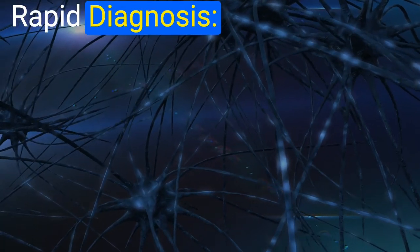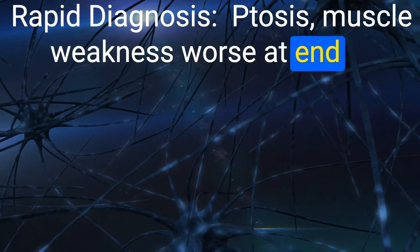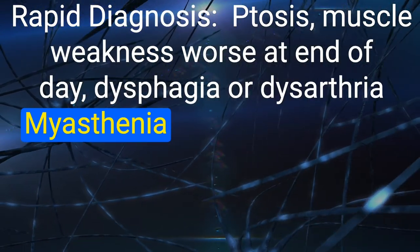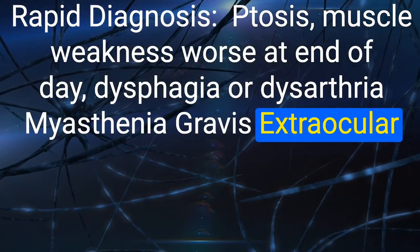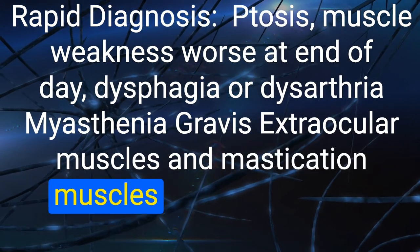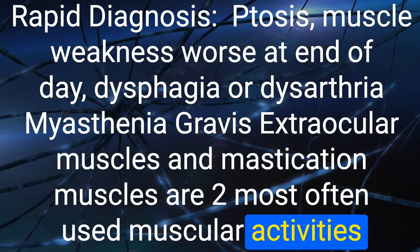34. Rapid diagnosis: ptosis, muscle weakness worse at end of day, dysphagia, or dysarthria — myasthenia gravis. Extraocular muscles and mastication muscles are the two most often affected muscular activities.